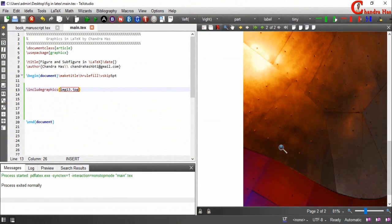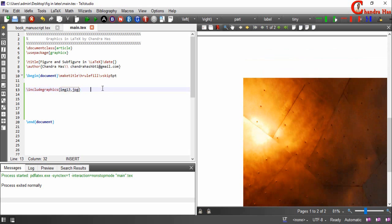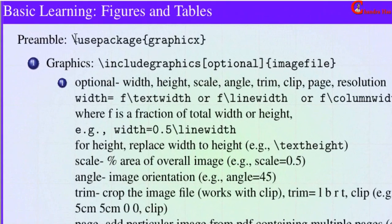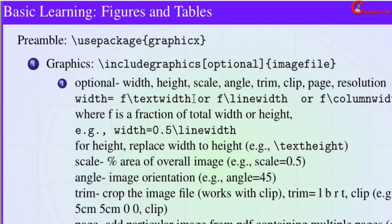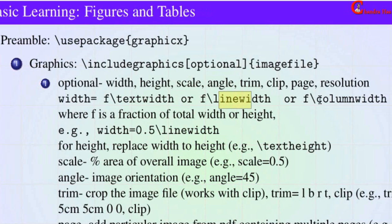It's coming, as you can see, but it's very large so we can reduce it. Here are some instructions: first add the graphicx package, then use includegraphics with the file name in curly brackets. In square brackets we can set the image size, and also rotate and crop the image. We can write width equal to 0.5 linewidth — that means the graphic size will be reduced to 50% of the total line width of the document.